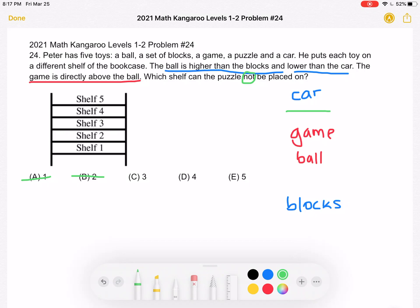What about four? Four would be right here. That's also fine. And then five would be here, and that's also fine. So our correct answer: the puzzle cannot be placed on shelf three because it would come between the game and the ball, and we can't do that. So we have answer choice C.